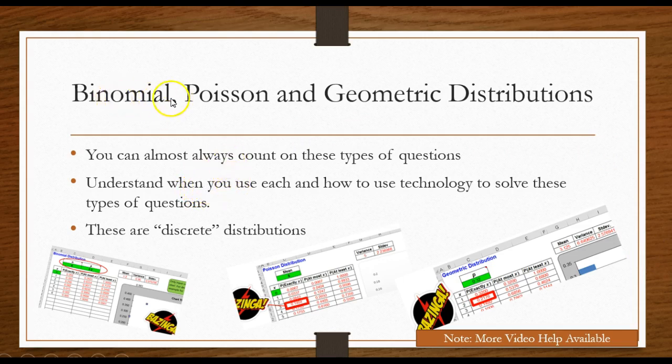Understand when you use each. In other words, what's the difference between a binomial, a Poisson, and a geometric distribution. Understand how to use technology. You know the formulas are always given but you need to either be able to use your calculator, an Excel spreadsheet, some type of statistical software.